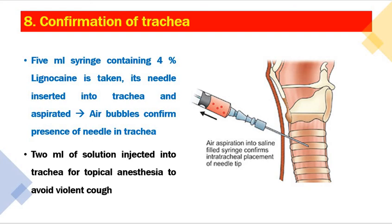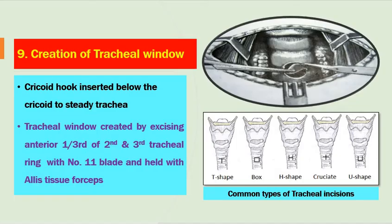Next, the trachea must be confirmed. Take a 5 ml syringe containing 4% lignocaine, insert the needle into the trachea and aspirate — if air bubbles come into the syringe, the needle is confirmed to be in the trachea. Always palpate the midline to confirm the trachea. Then inject 2 ml of this solution into the trachea for topical anesthesia to avoid violent coughing once the trachea is entered. Now comes the most important step: creation of the tracheal window. A cricoid hook is inserted below the cricoid to stabilize the trachea, and a window is created by excising approximately one-third of the 2nd and 3rd or 3rd and 4th tracheal rings using a number 11 blade.